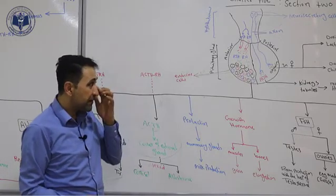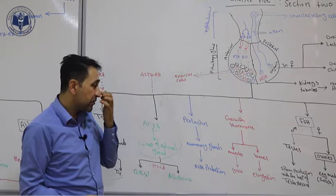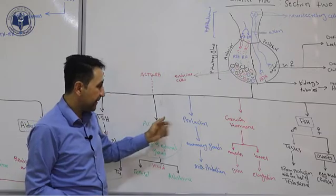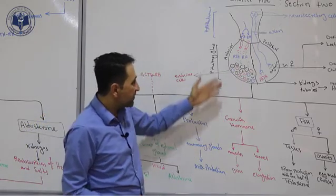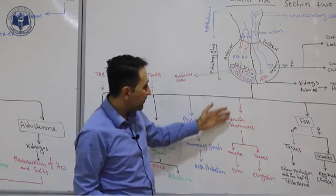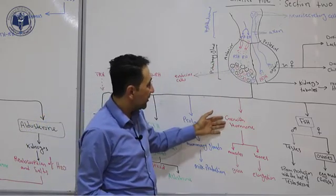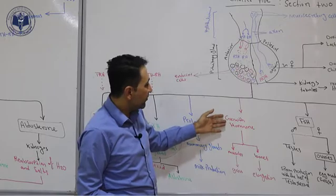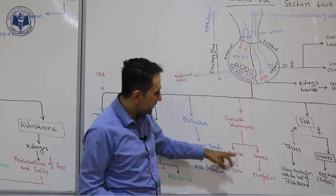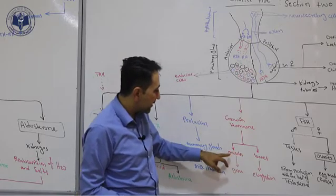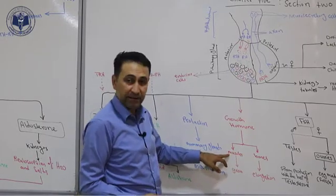Unlike oxytocin, prolactin stimulates the mammary glands to produce milk. So both oxytocin and prolactin are important for the mammary glands during breastfeeding. Another hormone produced by the anterior lobe is growth hormone, which has two targets in the body: skeletal muscles and bones.